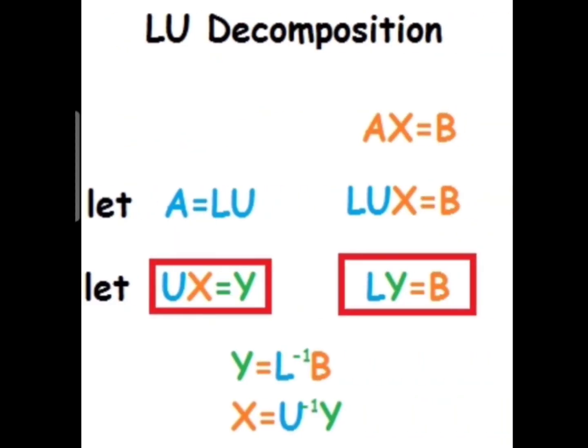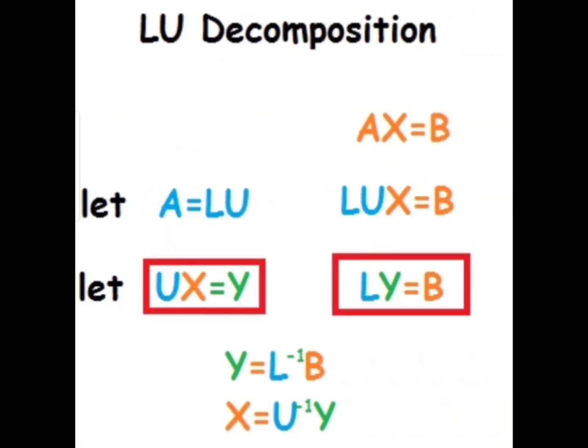We can write LY equals B as Y equals L inverse times B, and using this equation we find matrix Y. The last step is to write UX equals Y as X equals U inverse times Y. Using this equation we find matrix X, which is the solution of the given system of linear equations.